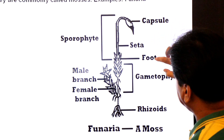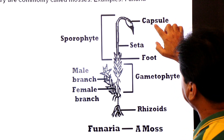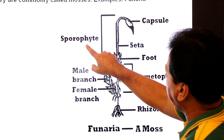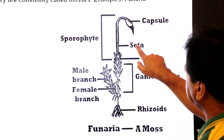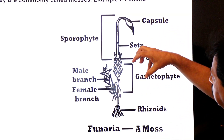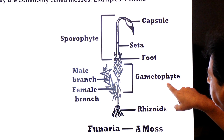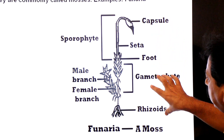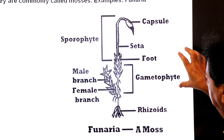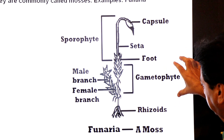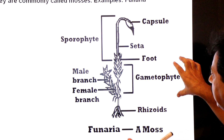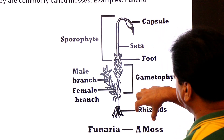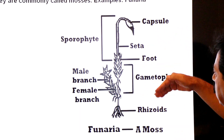The sporophyte is differentiated into foot, seta (stalk), and capsule. The capsule is the sporangium through which the sporophyte produces spores. The foot is embedded into the female gametophyte in order to get nourishment, so the sporophyte is dependent on the gametophyte. In mosses, the dominant generation is also the gametophyte, which is free-living and photosynthetic, and the sporophyte is dependent on the female gametophyte, drawing nourishment through the foot.